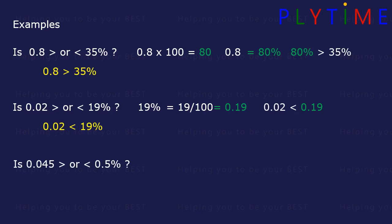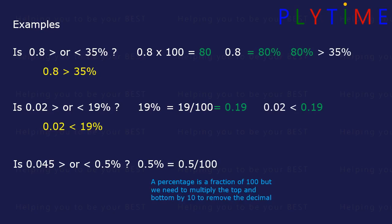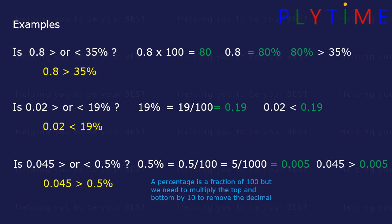Let's look at a harder one. Is 0.045 greater than or less than 0.5%? 0.5% is the same as 0.5 over 100. A percentage is a fraction of 100, but we need to multiply the top and the bottom both by 10 to remove the decimal. We end up with 5 thousandths. So 5 thousandths written as a decimal is 0.005. Now we can compare: 0.045 is greater than 0.005, so 0.045 is greater than 0.5%.